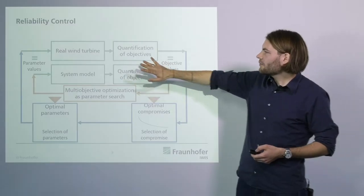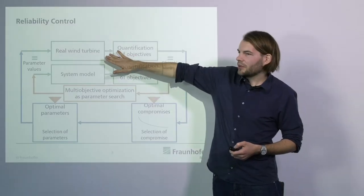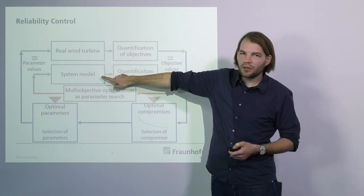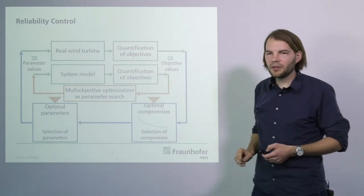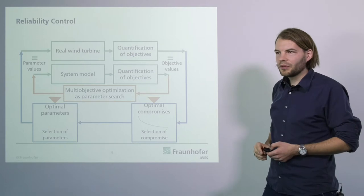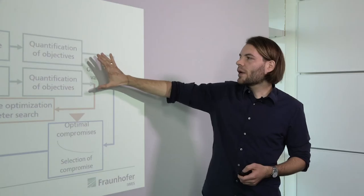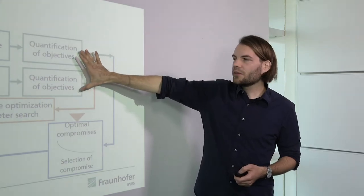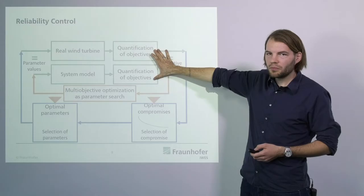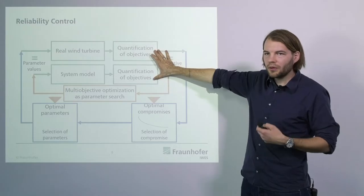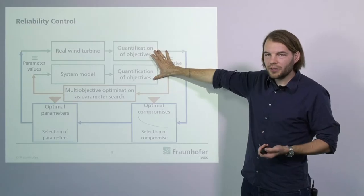The reliability controller that we propose is based on an optimization problem. We have the actual wind turbine and a system model — the system model can for example be based on the normal load computation models. We add to this a quantification of the objectives that we want to pursue, such as maximum energy or a low damage rate.